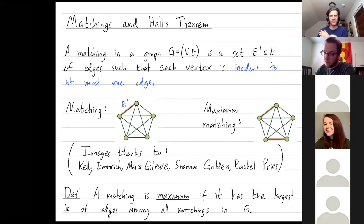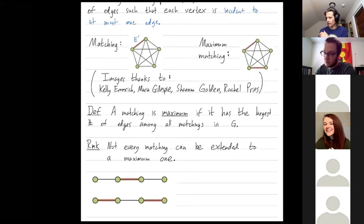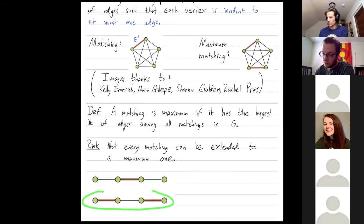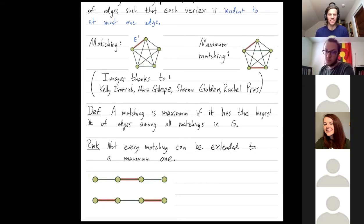The word maximum means something different than the word maximal. Here we have a maximal matching because you can't extend it — any other edge you try to add is not a matching. This is furthermore a maximum matching: it has the maximum number of edges. Note that not every maximal matching can be extended to a maximum one — here is a maximal matching that can't be extended to get a maximum one.